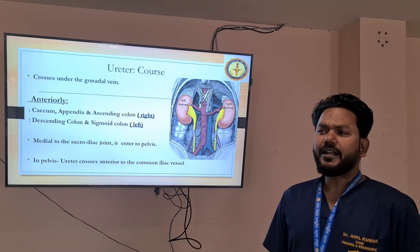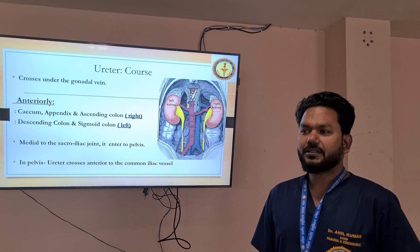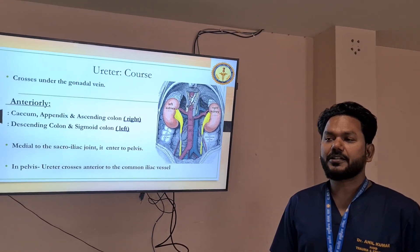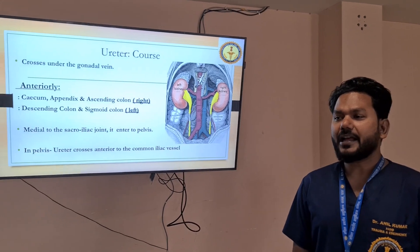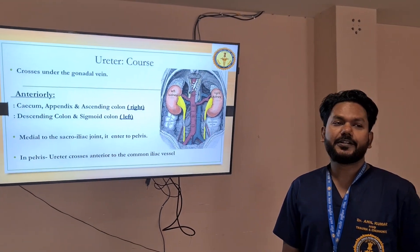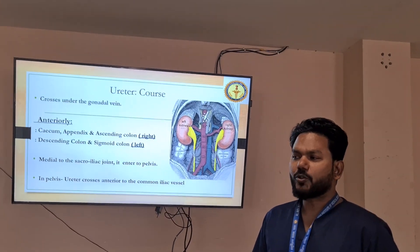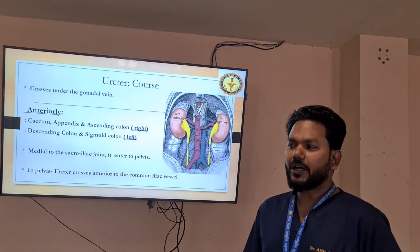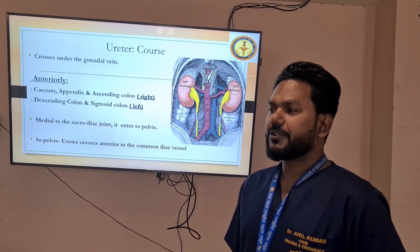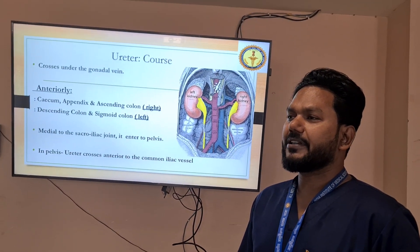Inferiorly, it crosses under the gonadal vein. Regarding its relations, anteriorly on the right side, it is related to the cecum, appendix, and ascending colon, and on the left side, it is related to the descending colon and sigmoid colon. Medial to the sacroiliac joint, it enters the pelvis, and in the pelvis, the ureter crosses anterior to the common iliac vessels.